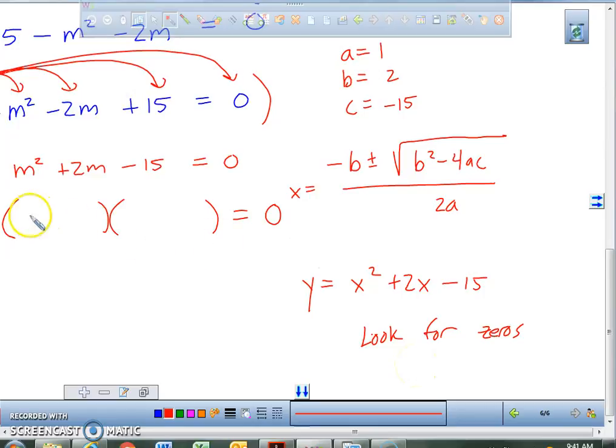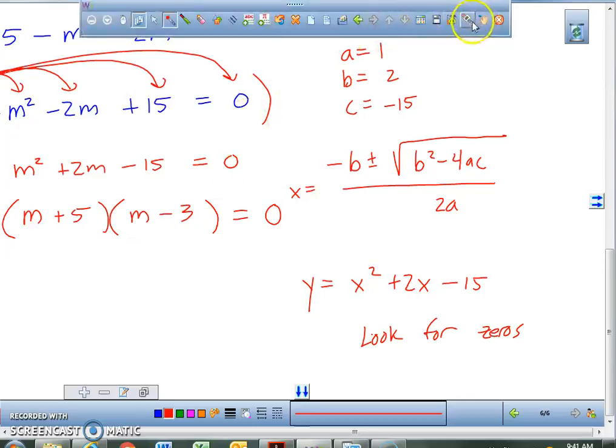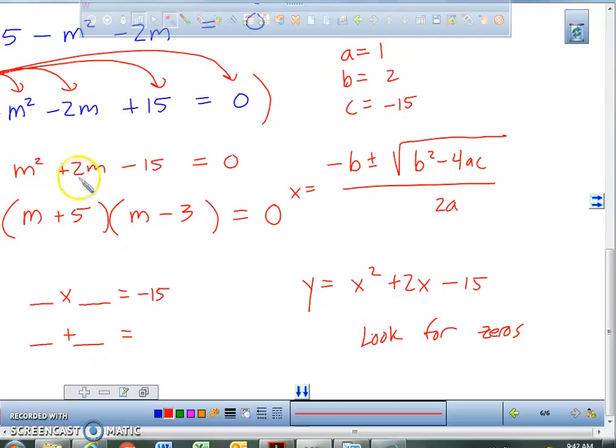Or, you can factor it. This factors to M plus 5 and M minus 3. Now, why does it factor those two numbers? Because a 5 minus a 3 is a 2 and 5 times a negative 3 is a negative 15. Two numbers had to multiply together to equal this last coefficient, which is a negative 15 and two numbers had to add together to equal this middle coefficient, which was a 2. And I found those numbers to be a 5 and a negative 3. 5 plus negative 3 is 2, 5 times negative 3 is negative 15.